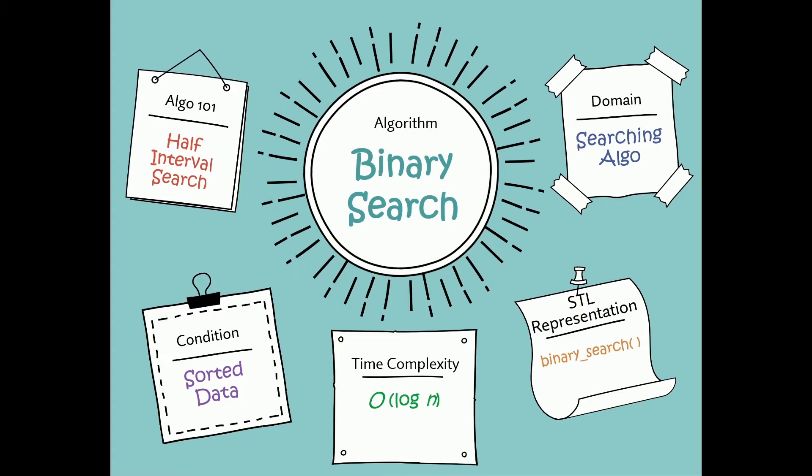Binary search, also known as half interval search, is a searching algorithm used to find a particular value in an array. The most important requirement for binary search is that the data must be sorted in ascending or descending order.